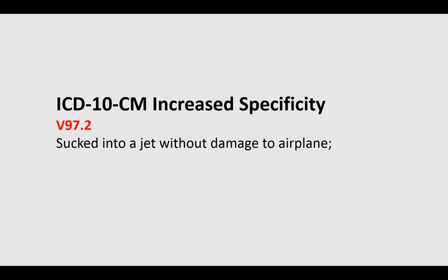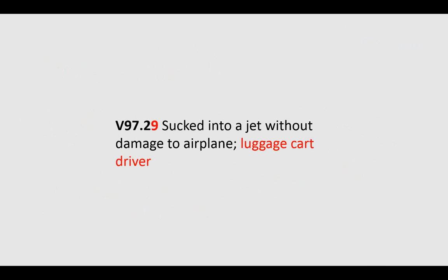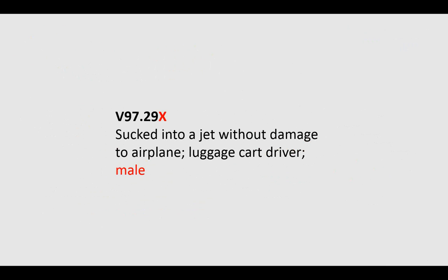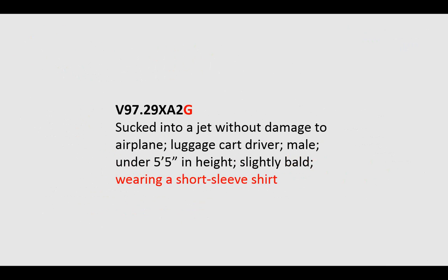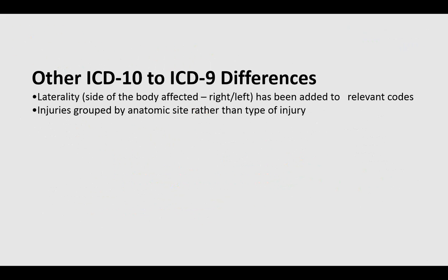The humor gets even deeper: this code is four characters in length, but if this was a luggage car driver sucked into the jet engine, it expands by one character. If this was a male luggage car driver, one more character. Under five feet five in height, yet another. Slightly bald, yet another. Wearing a short-sleeved shirt, yet another. In the world of pre- and post-payment audits, our documentation must also match the specificity level at which we're coding — we can face just as bad a cash flow crisis from poor documentation as from not finding the most specific code.